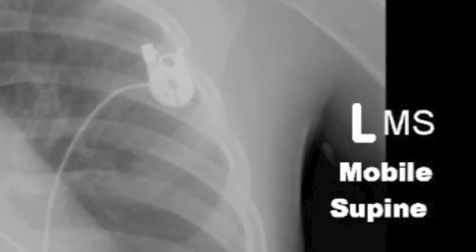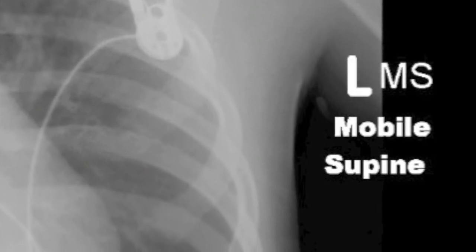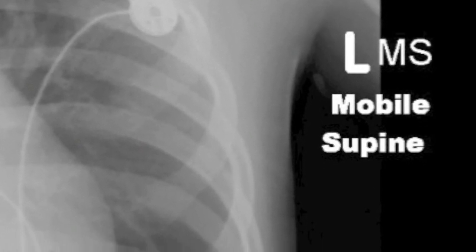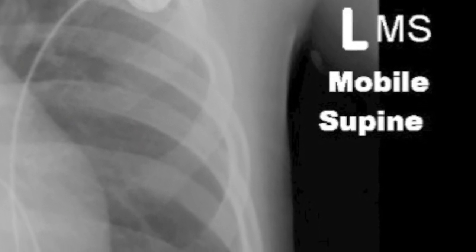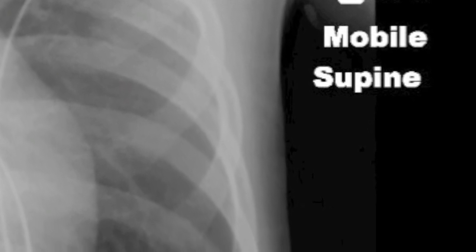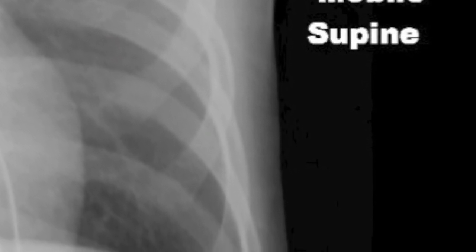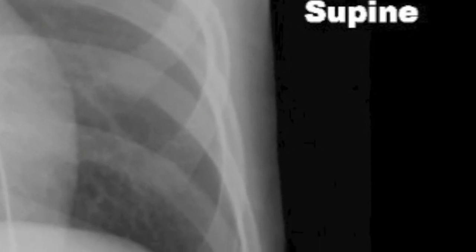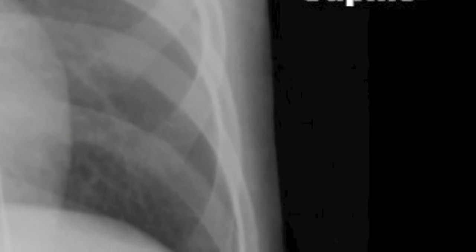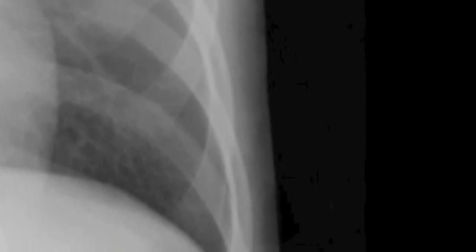Finally, carefully examine the pleural spaces. Look for a pneumothorax on the film. Also check for pleural fluid in the costophrenic angles, or encroaching around the outside of the lung laterally.